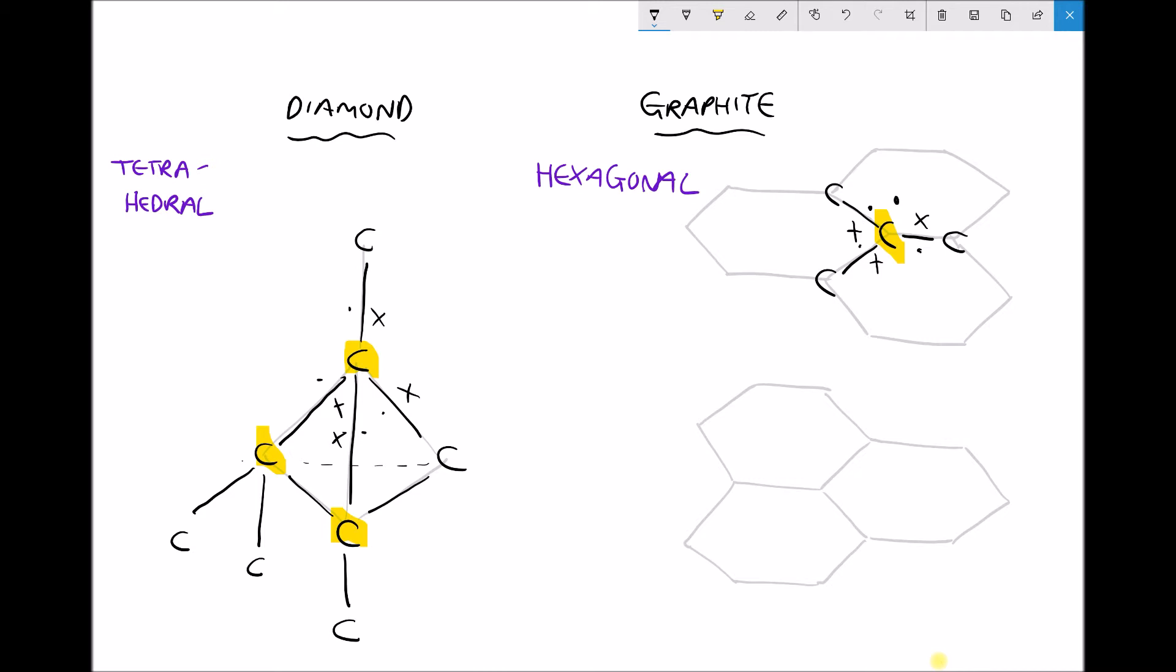Now that's going to be true for all of the carbons in that layer or in that structure and we'll look at the implications of that in a moment. If we look at our layer at the bottom we end up with exactly the same arrangement where each carbon only bonds to three other carbons and we end up with a free electron. Now in between those two layers what we end up with is weak intermolecular forces and we've seen these in a previous tutorial.